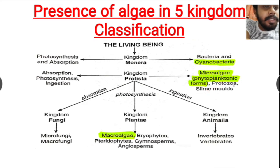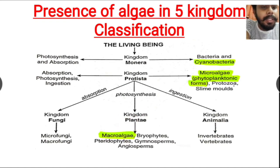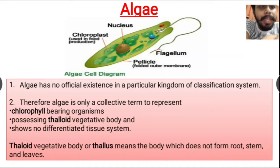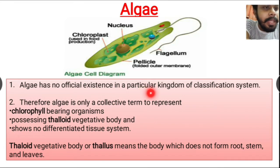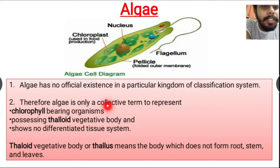In Protista, the microalgae which are the phytoplanktonic forms are present. In kingdom Plantae, all the macroalgae are placed. So algae doesn't have any particular kingdom in our classification system. Therefore algae is only a collective term to represent organisms which contain chlorophyll.